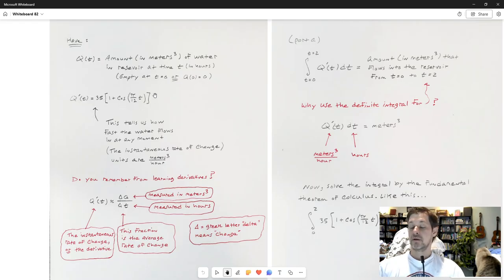Then I'm given q'(t), which is 35 times 1 plus cosine pi over 12t. That tells me how fast water is flowing into the reservoir at any moment. Because this tells me how fast water is flowing in, it's an instantaneous rate of change.